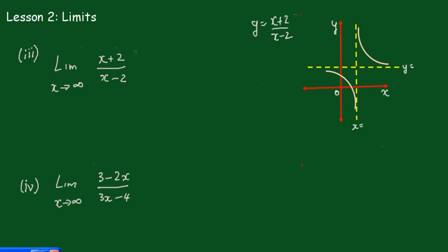All right, in the third example this is a more complicated type when you have a variable also in the numerator. I haven't indicated what these values are, but we can quite easily work out what x is going to be. You can see x cannot equal 2, so we have an asymptote at x equals 2.